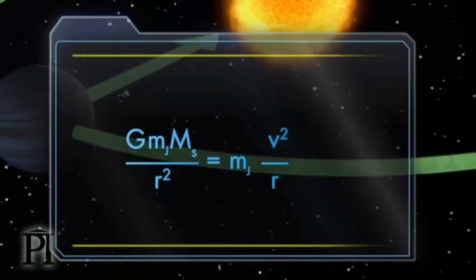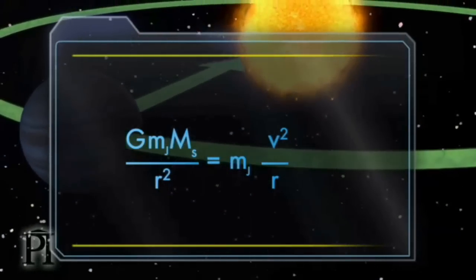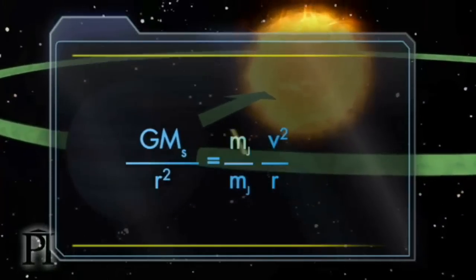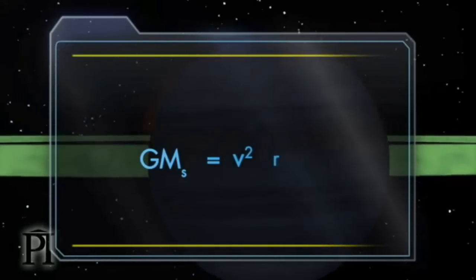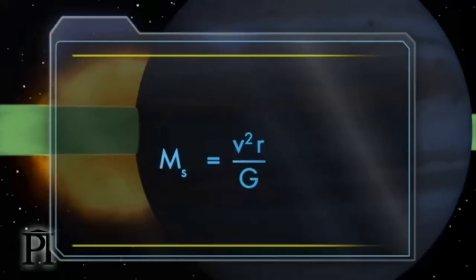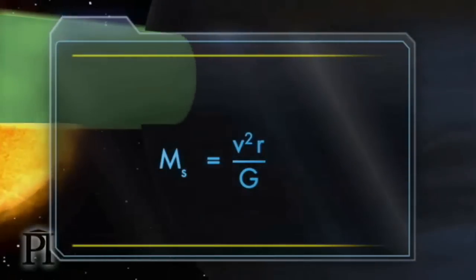If we want to know the mass of the sun, we rearrange the formula. This formula shows there's a relationship between mass and orbital speed.